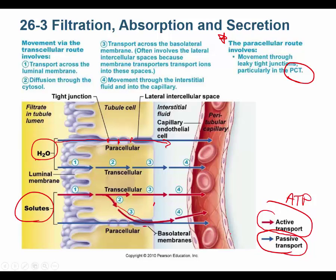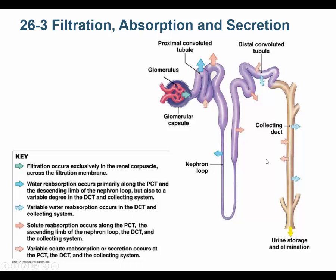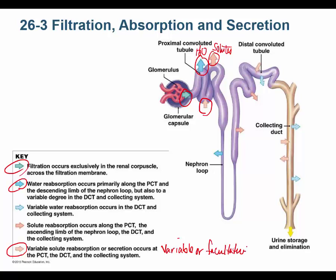This is a really important picture in your book. The green arrow is the initial filtrate. The blue arrow represents reabsorption of water; we can also reabsorb solutes. The dotted arrow means variable or facultative — meaning certain chemical signals can control it. Solid arrows mean obligatory — that happens no matter what.